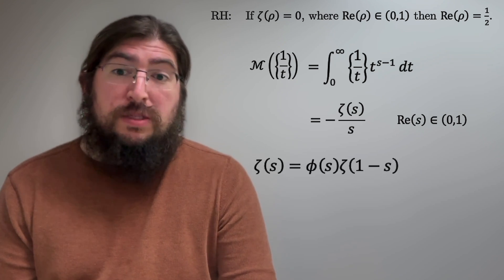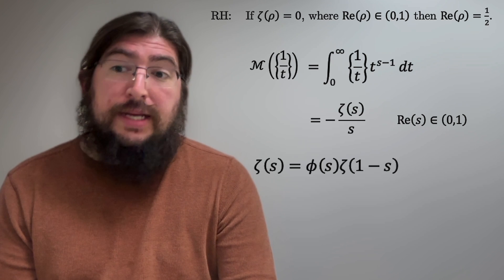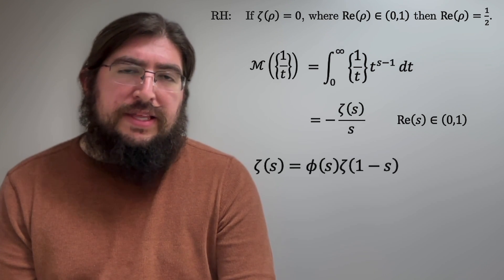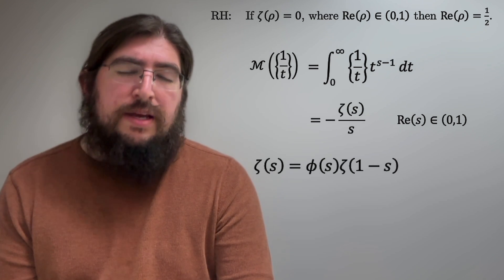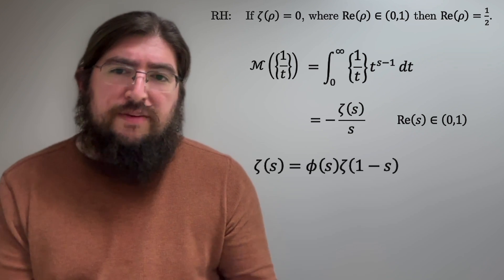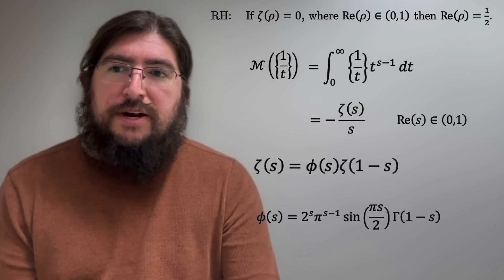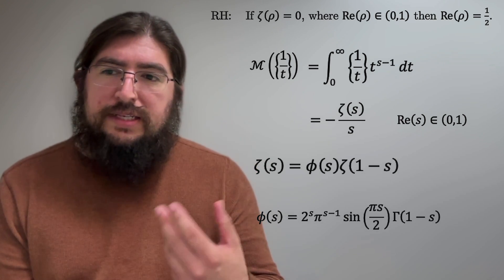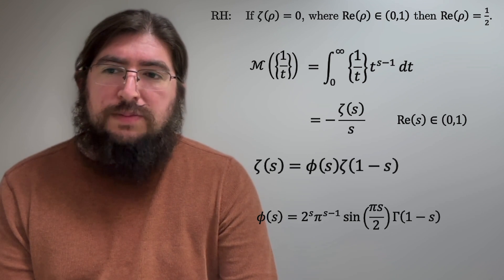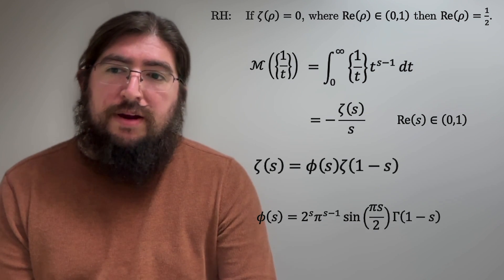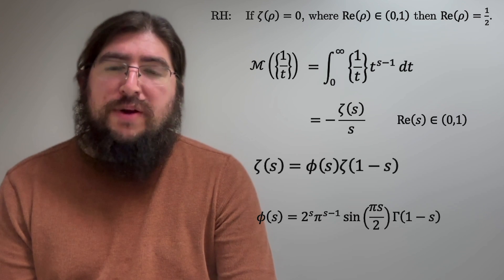Also, we have the functional equation, which is valid for every complex number s, and I'm writing it like this. Zeta is equal to a function phi times zeta of 1 minus s, where phi, actually, if you want to know, is equal to this crazy expression here. It's 2 to the s times pi to the s minus 1 times sine of pi s over 2 times gamma of 1 minus s, if you're curious.